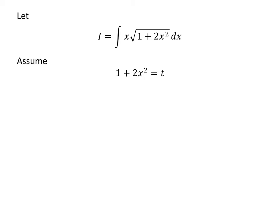Let us simplify the integral by application of the substitution method. Assume 1 plus 2 times square of x is equal to t.